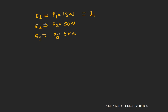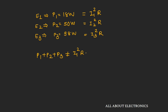We can write P1 = I1²·R = 18W, where I1 is the current through R when E1 acts alone. Similarly, P2 = I2²·R and P3 = I3²·R. Since superposition cannot be applied directly to power calculations, when all three voltage sources act simultaneously the total power P1 + P2 + P3 does not equal I1²R + I2²R directly. Instead, the total current through R is I_total = I1 + I2 + I3.